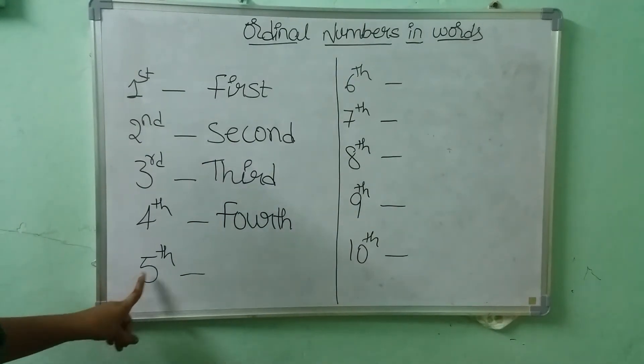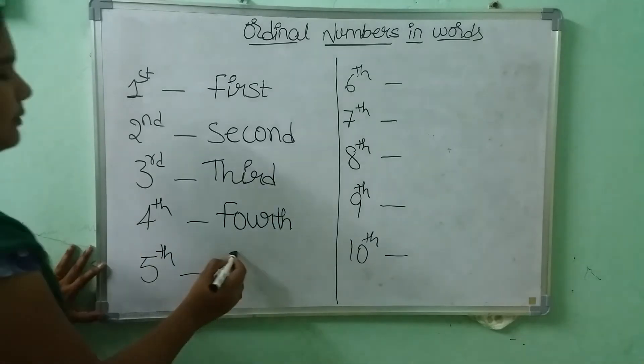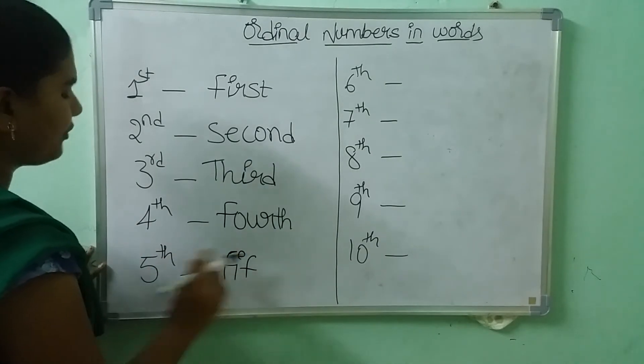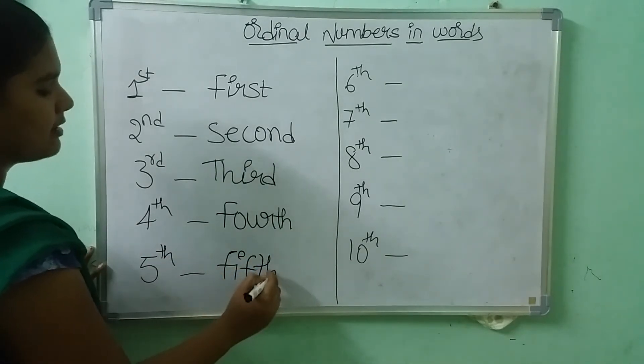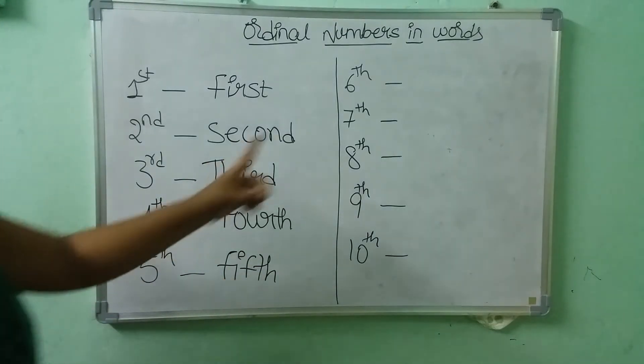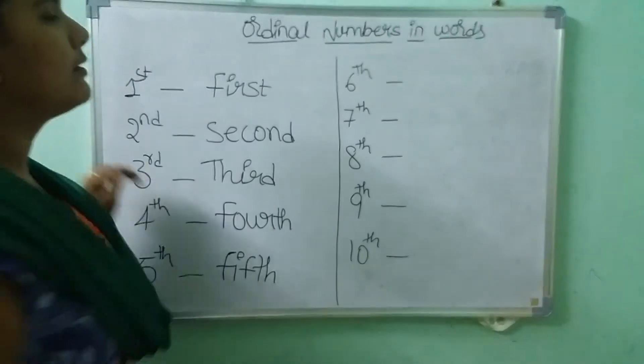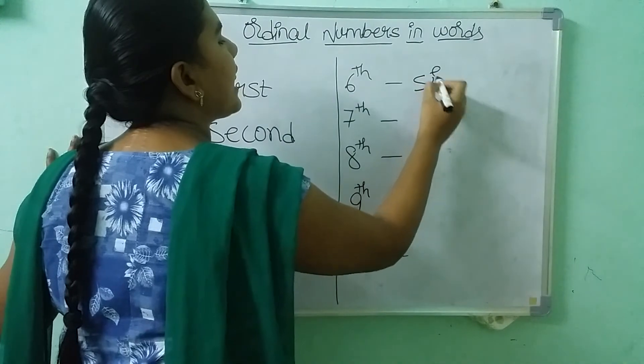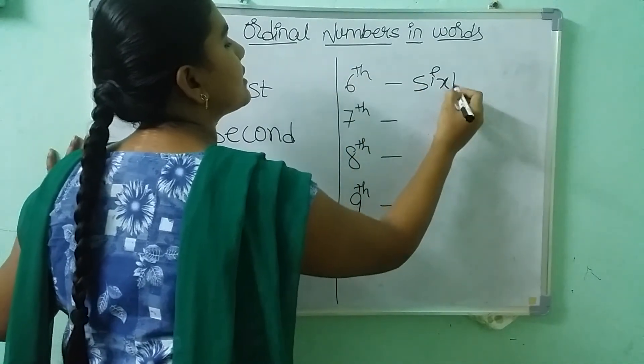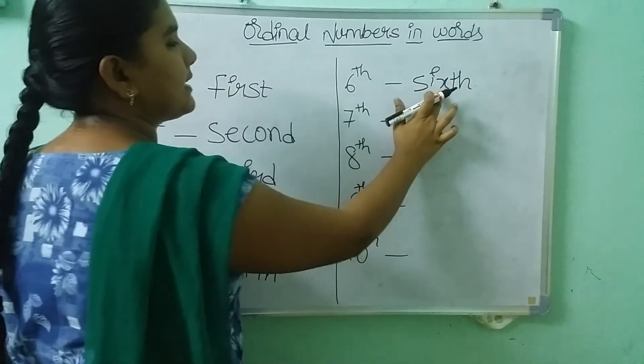And next we have fifth. What is this children? Fifth. Fifth. F-I-F-T-H. This is fifth. Next. Sixth. S-I-X-T-H. Sixth. What is this children? Sixth.